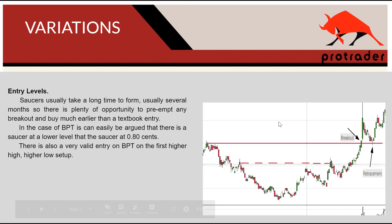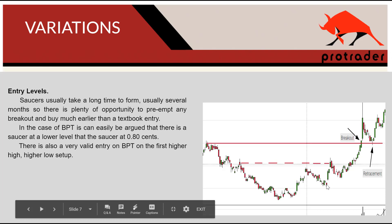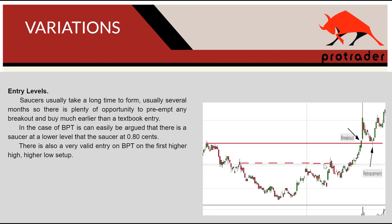With a typical saucer — and we have BPT again here — there are quite often various different buy signals before the actual completion of a saucer. We can see where we have a higher-high, higher-low situation. We also have a smaller saucer within the larger saucer. It can be argued that entry can be made at either of these levels, and then add to a position when you see the saucer finally get the breakout.